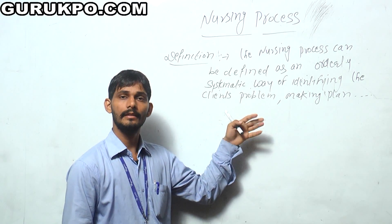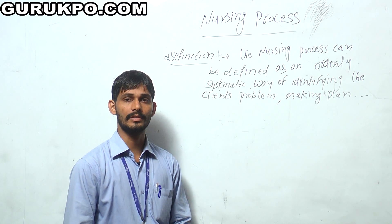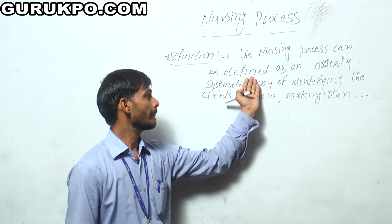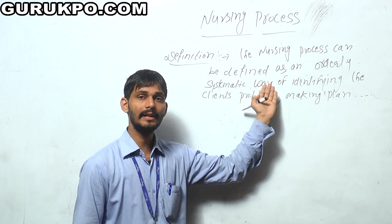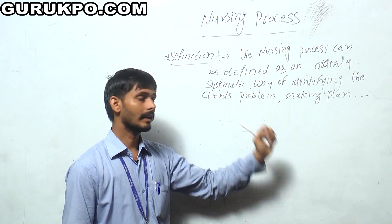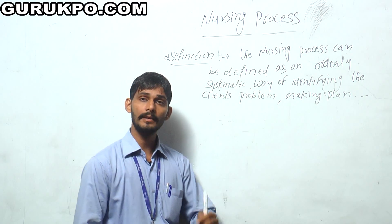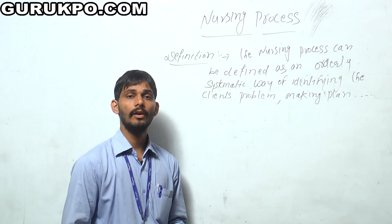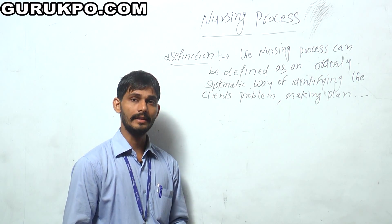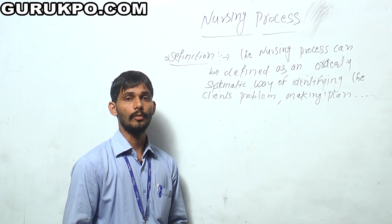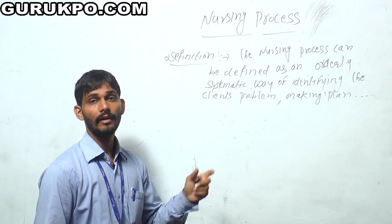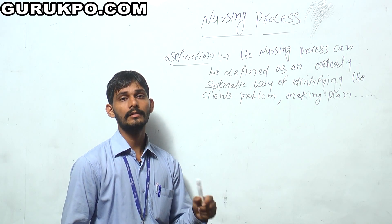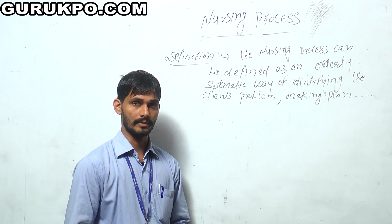Definition: The nursing process can be defined as an orderly, systematic way of identifying client's problems, making a plan to solve them, initiating the plan or assigning it to others, then evaluating the extent of effectiveness of the plan, and resolving the problems.